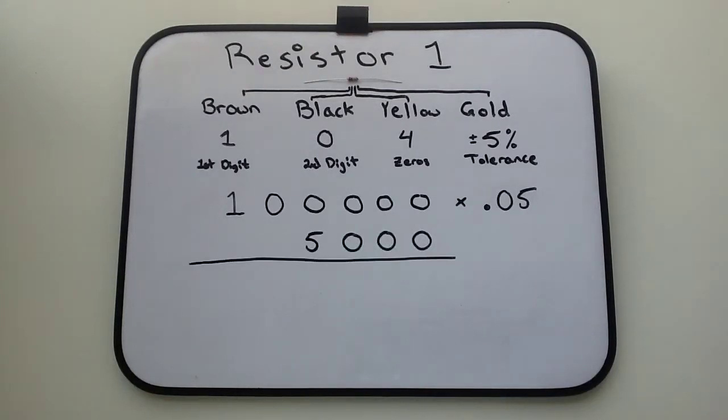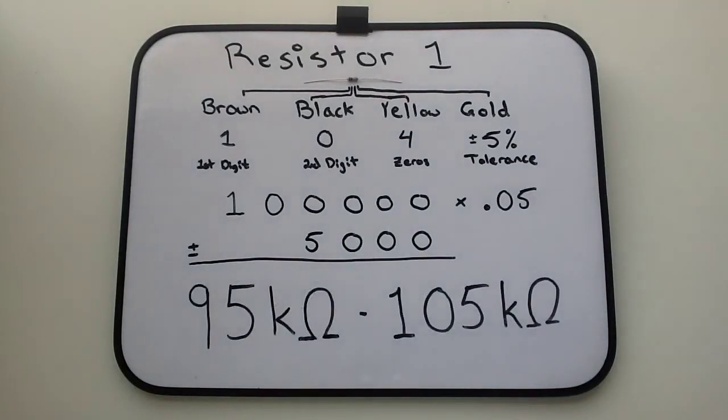The 5,000 ohm tolerance value is subtracted from the 100,000 ohm resistance value and added to the 100,000 ohm resistance value. These values should look like this in engineering notation: 95k ohms to a max 105k ohms resistance. Cheers!